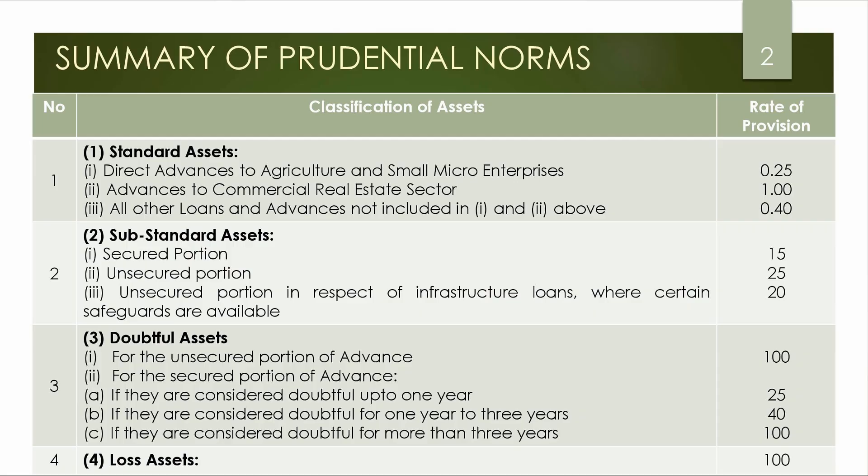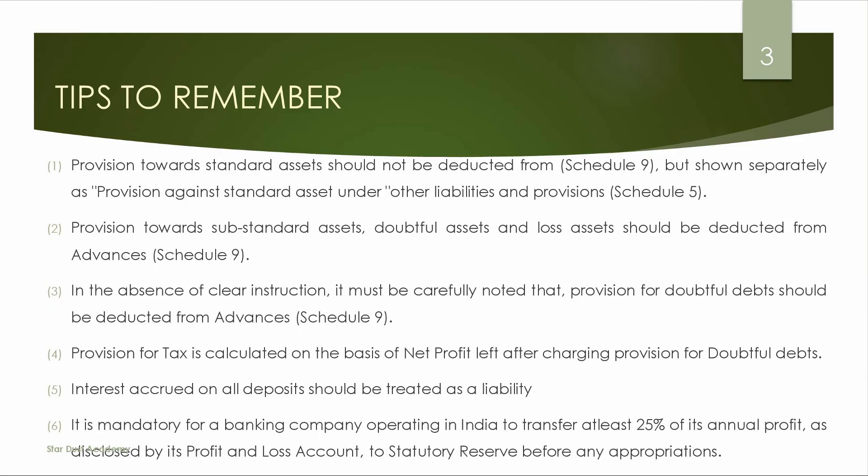Now we have a provision summary. Let us discuss some important points. The first point is: provision towards Standard Assets should not be deducted from Advances in Schedule No. 9. Schedule No. 9 means Assets and Loans. Provision against Standard Assets should be shown under Other Liabilities and Provisions.